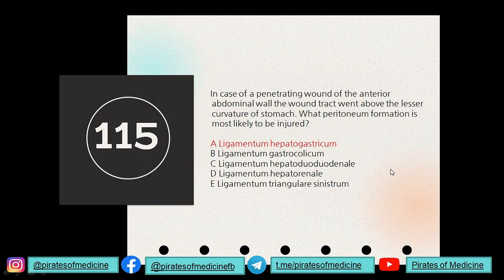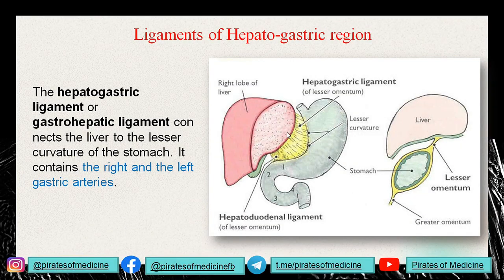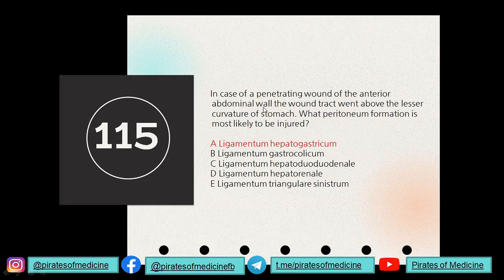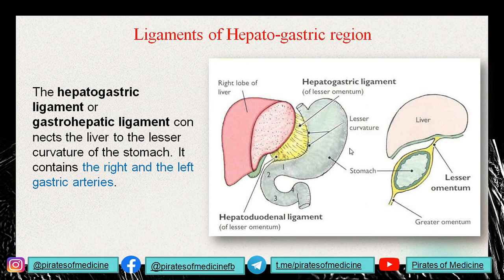Question 115: a penetrating wound on the anterior abdominal wall went over the lesser curvature of the stomach — what peritoneal formation is most likely injured? The hepatogastric ligament connects the liver to the lesser curvature of the stomach and contains the left and right gastric arteries. A wound above the lesser curvature would injure the ligamentum hepatogastricum — the hepatogastric ligament.